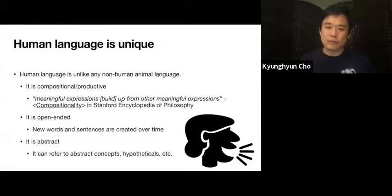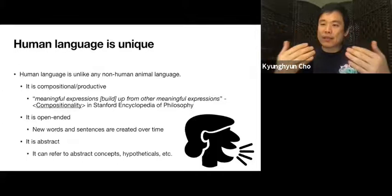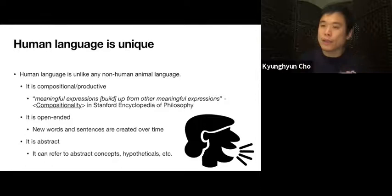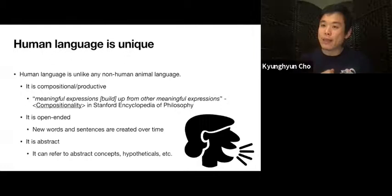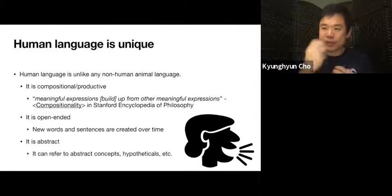Third, it is abstract. We can use language to refer not only to concrete things that exist — that we can see or sense — but also to abstract concepts as well as hypothetical scenarios that have never happened and will not happen. Think about democracy. It is a concept. We have a word for it. There is a name for it. But still, this is not a kind of thing that we can see, sense, or touch ourselves.